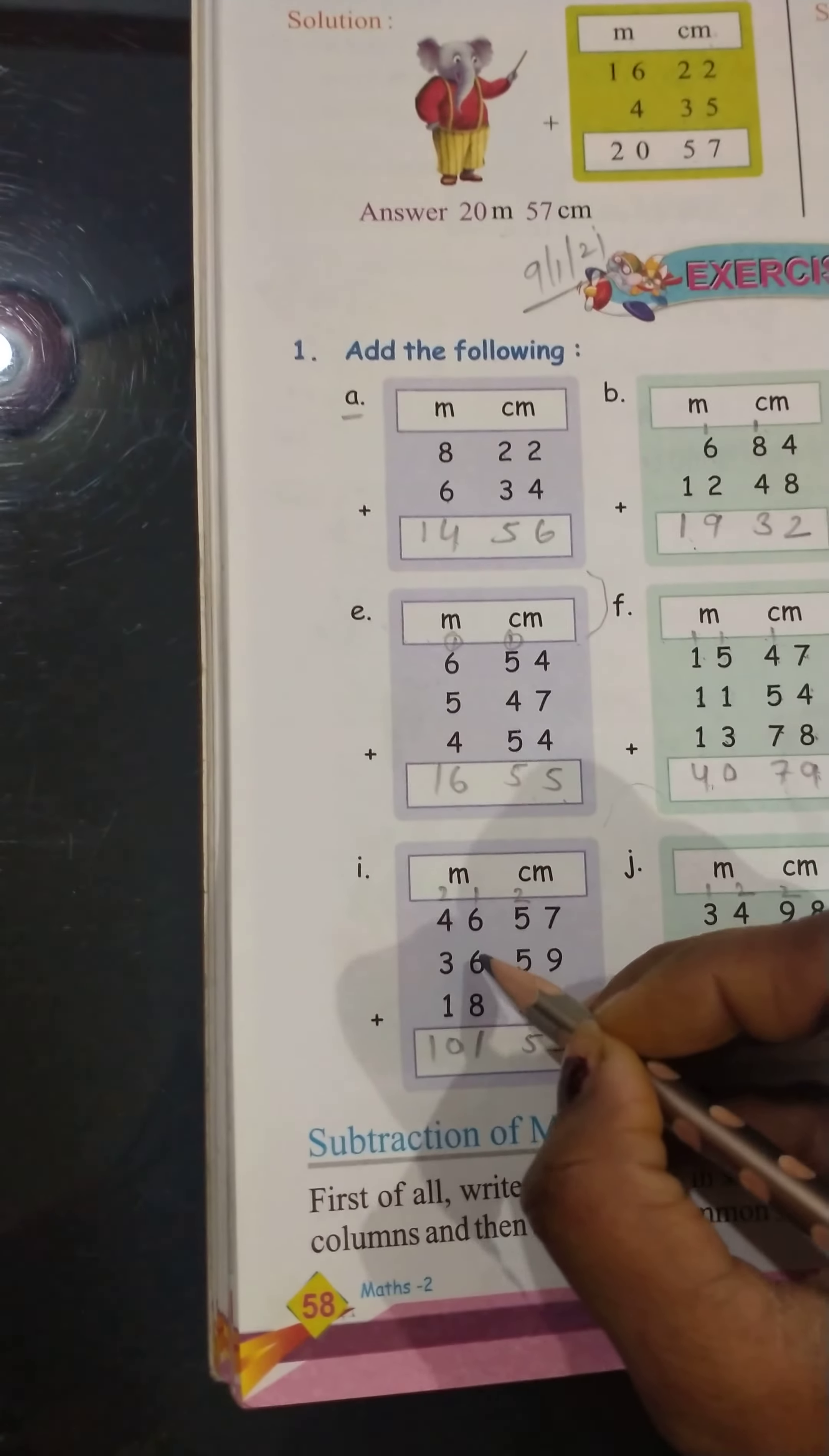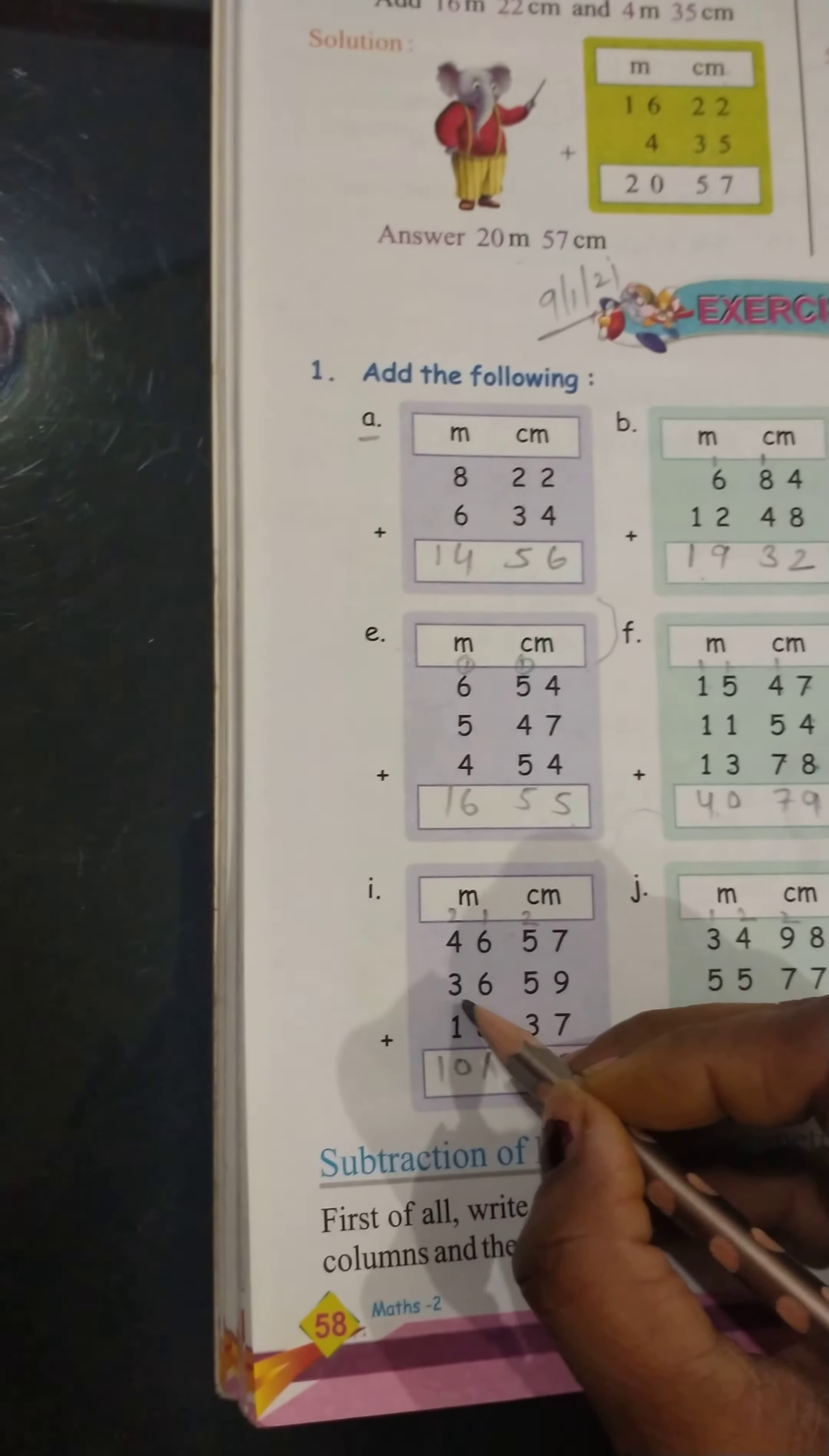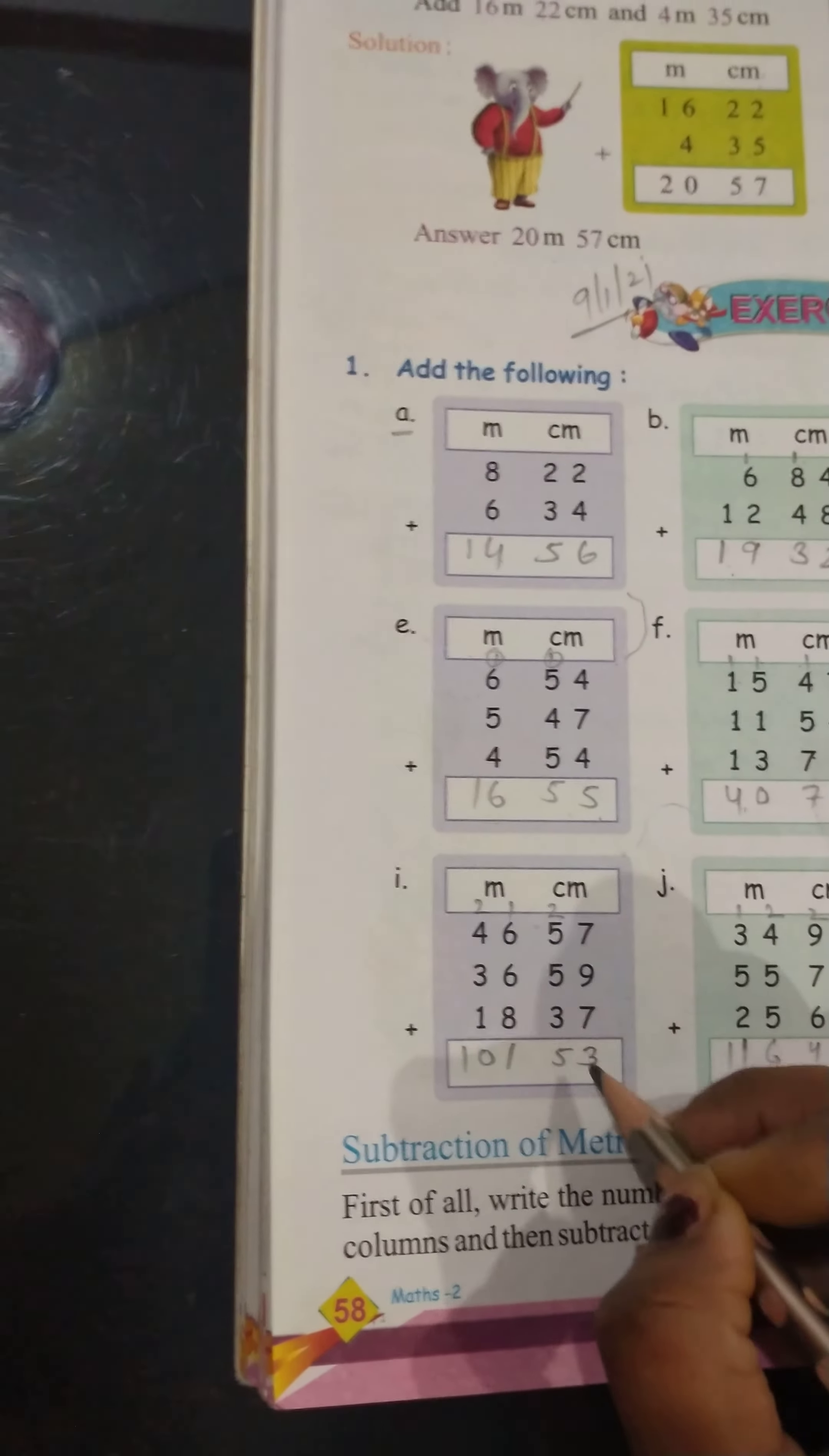15 come 1 carry. 6 plus 6, 12. 12 plus 8, 18. 20, 20 plus 1, 21. 21 come 2 carry. 4 plus 3, 7. 7 plus 1, 8. 8 plus 2, 10. 101 meter, 53 centimeter.